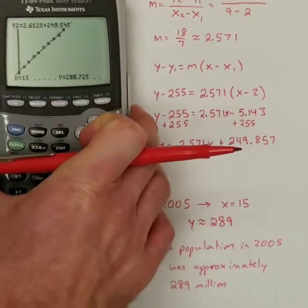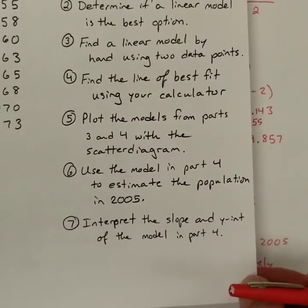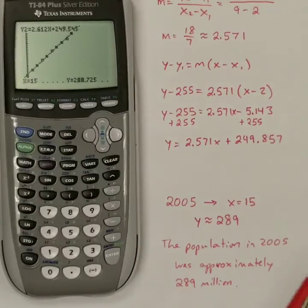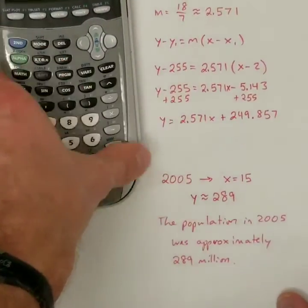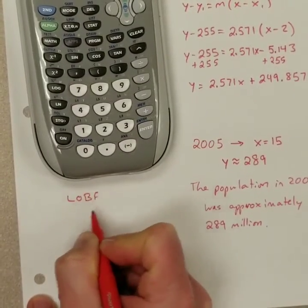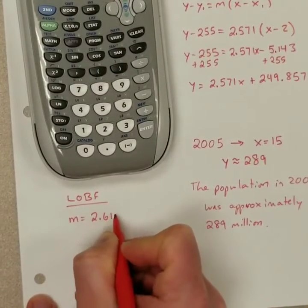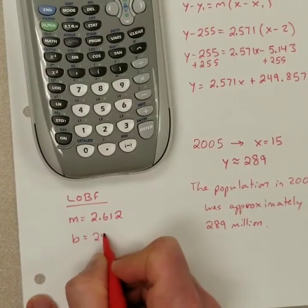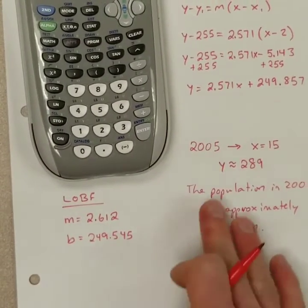Now, the last thing that I'm asking you to do in this problem is to interpret the slope and the Y-intercept. Interpreting these things is kind of interesting. You're looking at some numbers here, but they have a meaning behind them. And so what I'm going to do is I'm going to go back to that line of best fit. From the line of best fit from the calculator, it had a slope of 2.612 and a Y-intercept of 249.545.